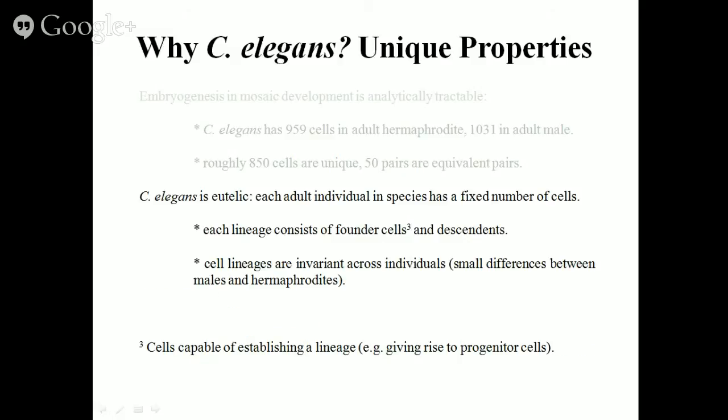C. elegans is also what they call a eutelic organism — each adult individual in the species has a fixed number of cells. In humans we have trillions of cells and can regenerate cells all the time, but in C. elegans the number of cells in the adult is fixed, and you can build what they call a lineage tree. It's a deterministic process — the cell lineages are invariant across individuals. There are small differences between males and hermaphrodites, but those can be characterized.